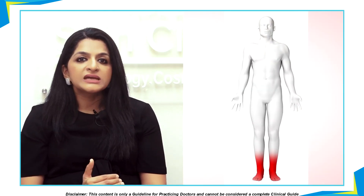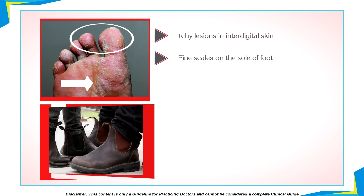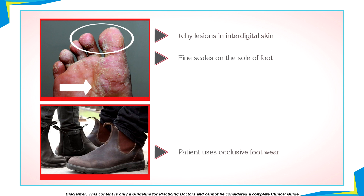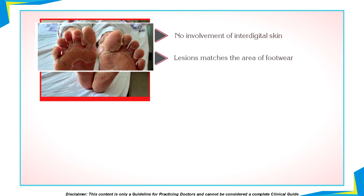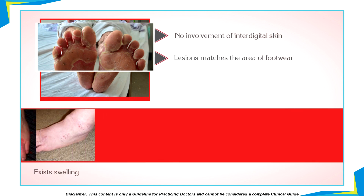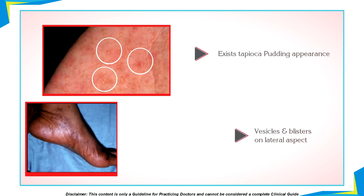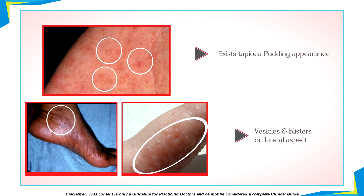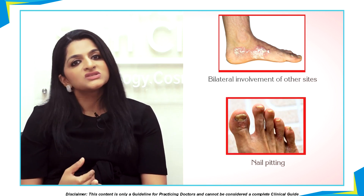Let us now talk about different types of lesions commonly seen on the feet. When there is involvement of the interdigital skin with fine scales on the sole of the foot and the patient has been using occlusive footwear, then this has to be a case of tinea pedis. When there is absolutely no involvement of the interdigital skin and the lesions match the area of footwear, with co-existing swelling, redness, itching, blisters, and pain, then it is a case of contact dermatitis. When there is an appearance of tapioca-pudding-like vesicles and blisters on the lateral aspect of the digits and sole, commonly in spring, then it is dyshidrotic eczema. If there is involvement of other sites and nail pitting, then your diagnosis is a straightforward psoriasis.